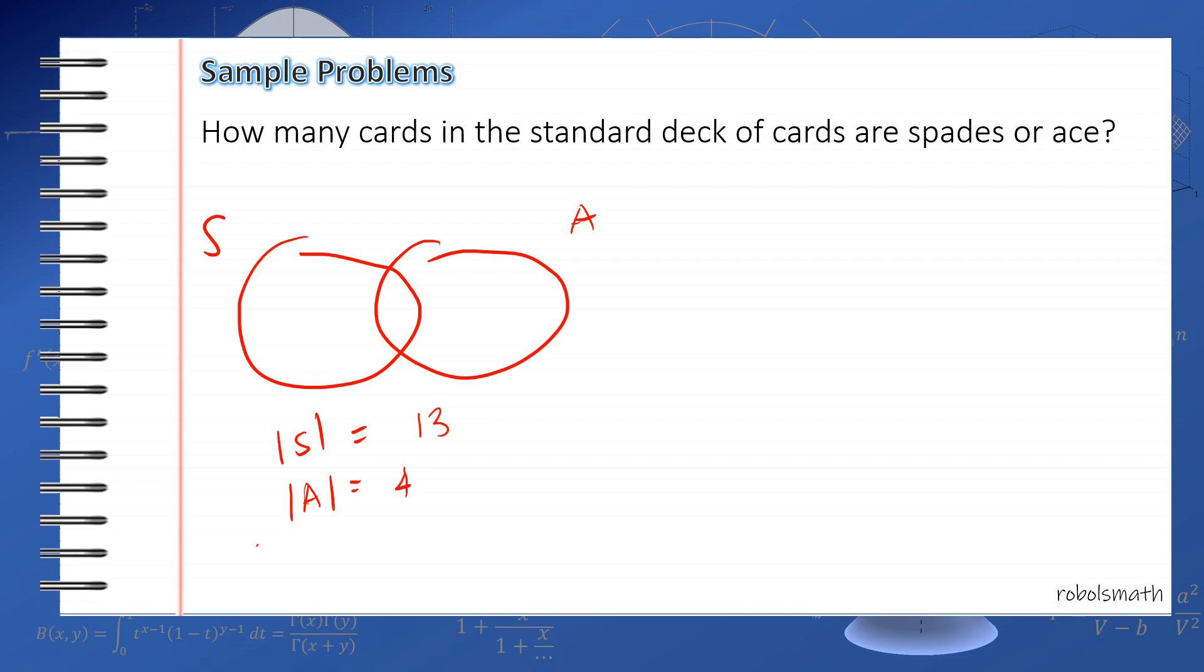What's S and A? S and A is a spade that is also an ace, which is the ace of spades. How many aces of spades? Just 1. So the total we want for this one is 13 plus 4 minus 1 equals 16. So 16 is the final answer.